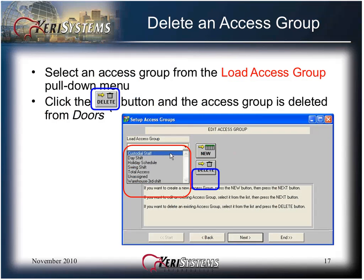To delete an access group, select that group from the Load Access Group pull-down menu. Click the Delete button and the access group is deleted from DOORS. If an access group is being used by a card holder, DOORS will not allow it to be deleted. You must first reassign the user to a different access group in Setup Users and save that change. You will then be allowed to delete the access group.